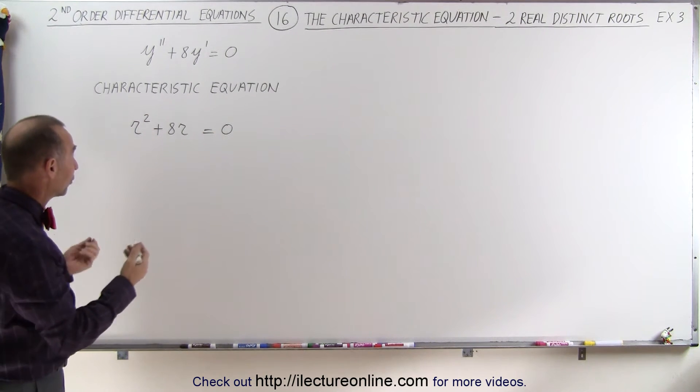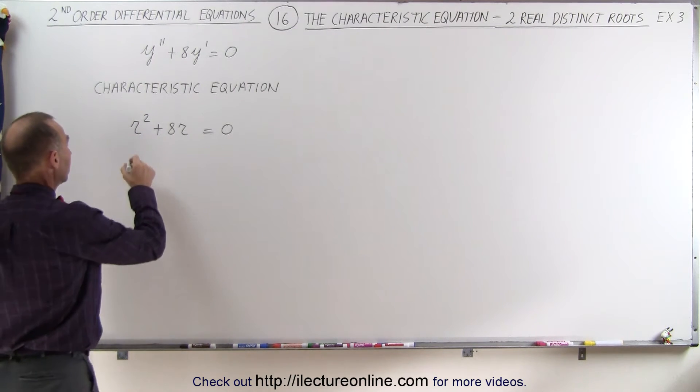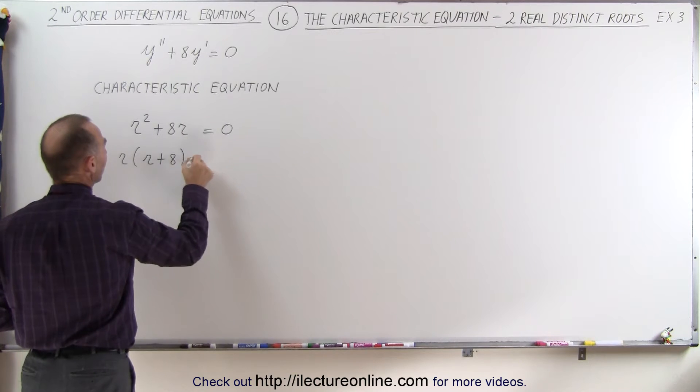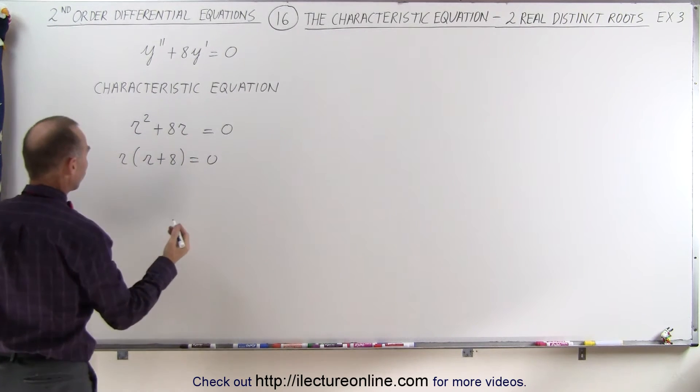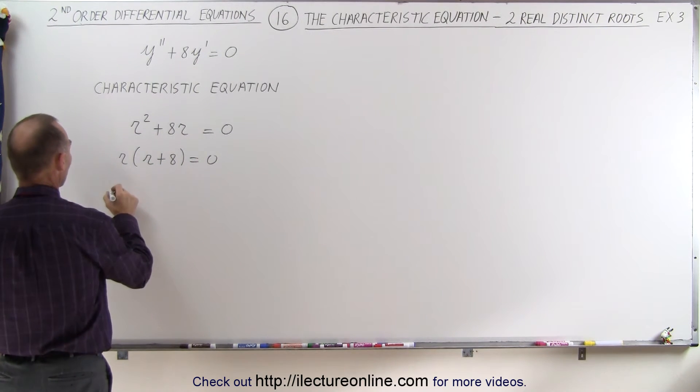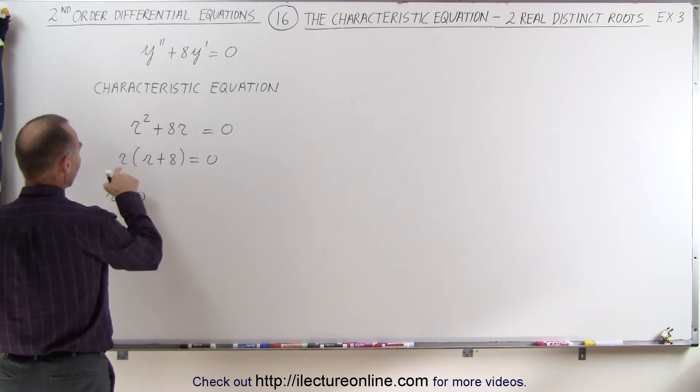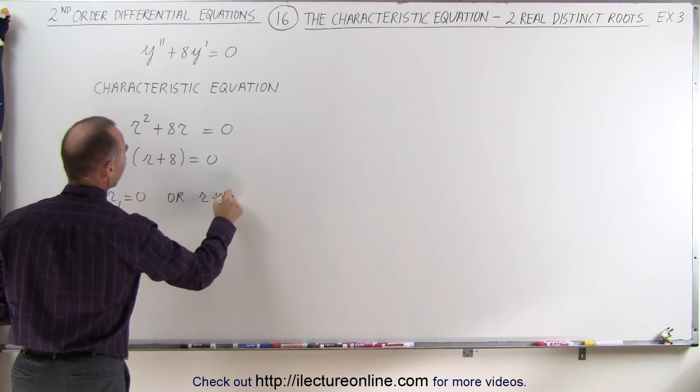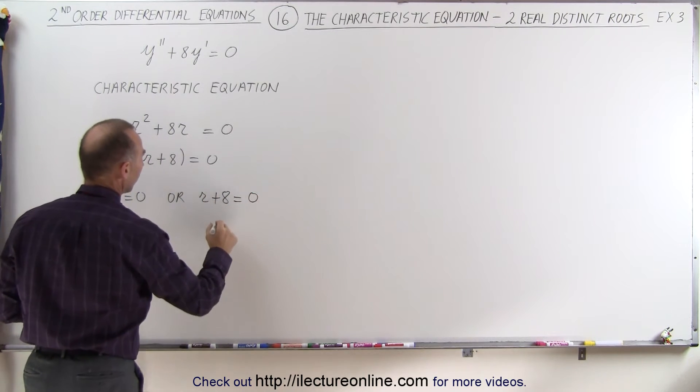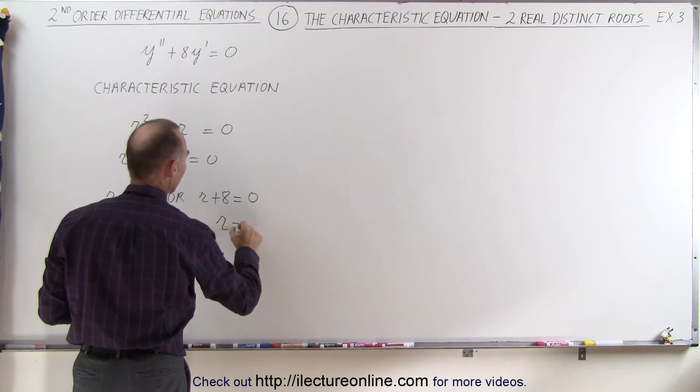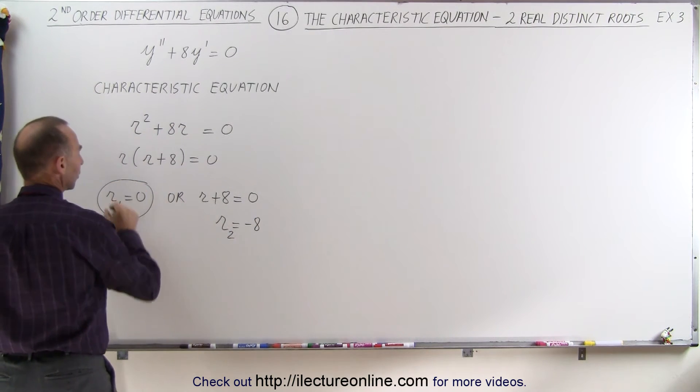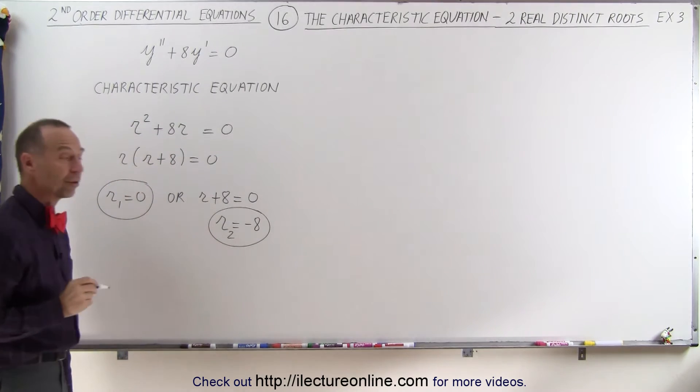Solve this for r to find the roots. We can factor out an r. This gives us r times r plus 8 equals zero, which leaves us with two solutions or two roots to this. We have r1 is equal to zero, because zero times this gives us zero, or r plus 8 equals zero, which means that r equals minus 8, which becomes the second root. So here are the two roots to that characteristic equation.